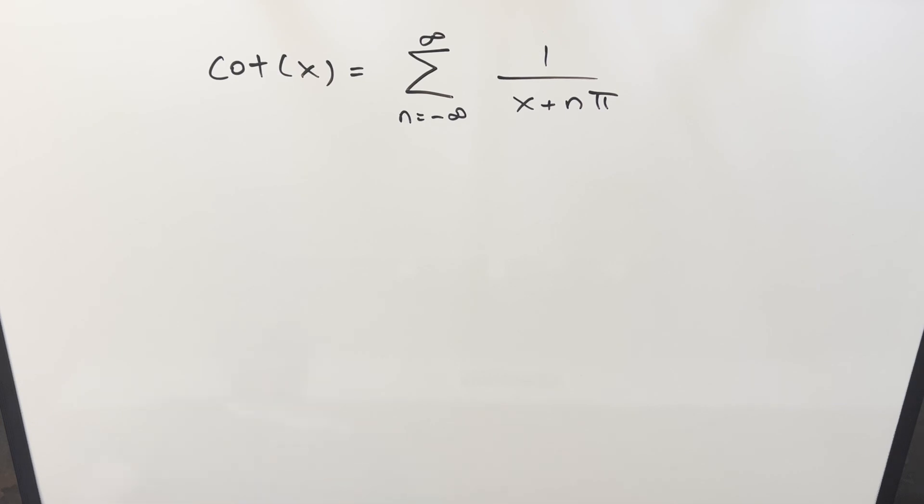Okay, we have on the board the series definition for cotangent of x is going to be equal to the sum from n equals minus infinity to infinity of 1 over x plus n pi.